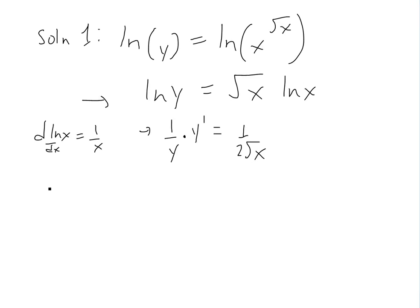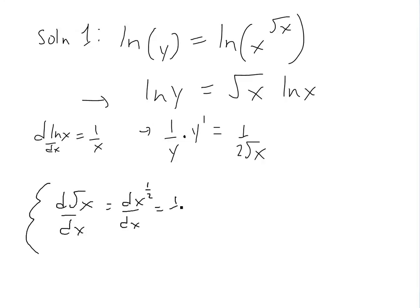I'll do a quick proof of this. The derivative of square root of x can be written as x to the power of 1 over 2, so using the power rule we bring down 1 over 2 and subtract 1 from the exponent, giving x to the negative 1 over 2, which equals 1 over 2 square root of x.